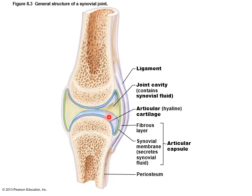There are reinforcing ligaments that support the joint and give it more strength. Sometimes you have extracapsular ligaments on the outside, and some joints have intracapsular ligaments — like in the case of the knee, where you have the cruciate ligaments on the inside. Those are all structures associated with the synovial joint.